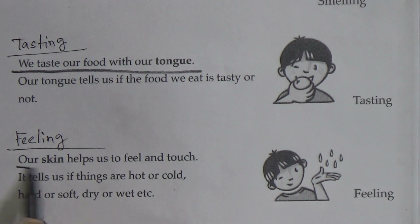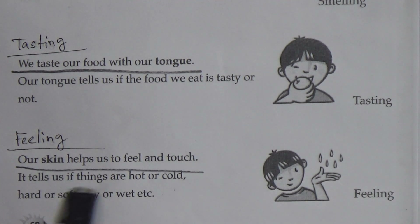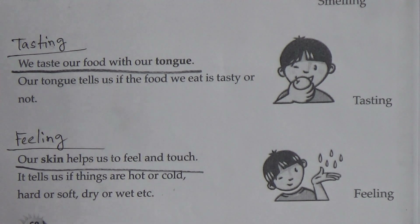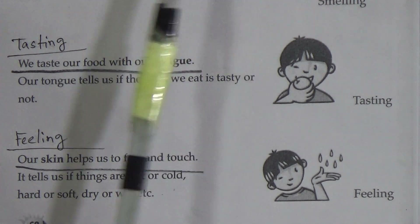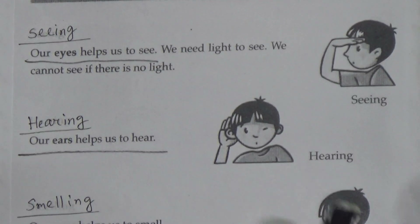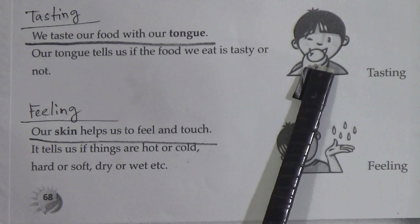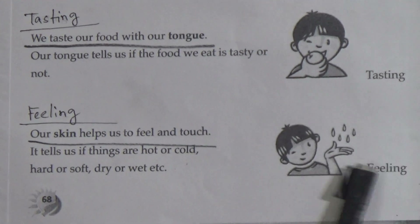Feeling — our skin helps us to feel and touch — underline this line. It tells us if things are hot or cold, hard or soft, and dry or wet. So my dear students, we have five senses: seeing, hearing, smelling, tasting, and feeling. Our eyes help us to see, our ears to hear, our nose to smell, our tongue to taste our food, and our skin to feel and touch.